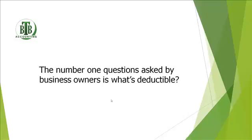The tax code is pretty general when it comes to what can be deducted. I'm going to give you a plain English explanation of what the tax code says. The tax code says that in order for a business expense to be deductible, it has to be ordinary or necessary. So let's talk about what that means.